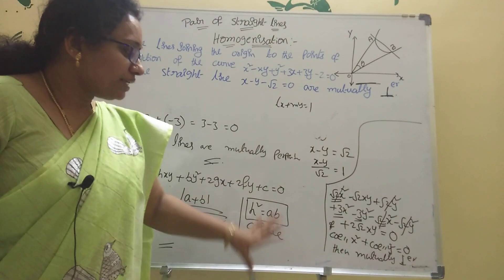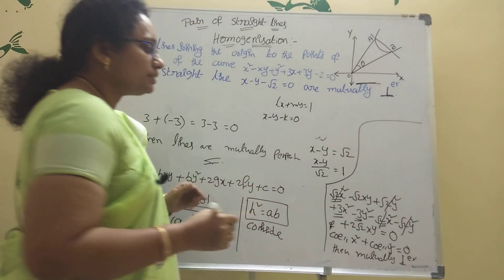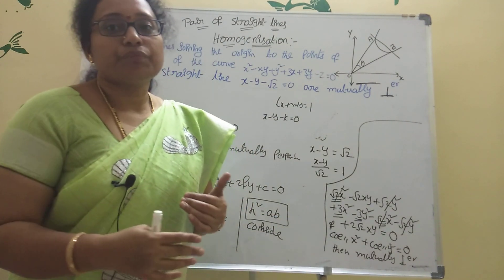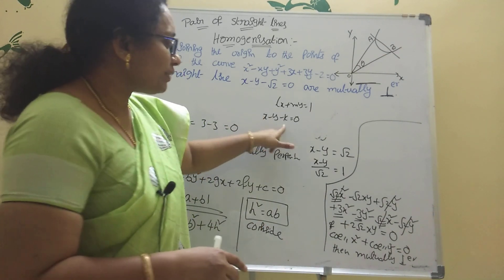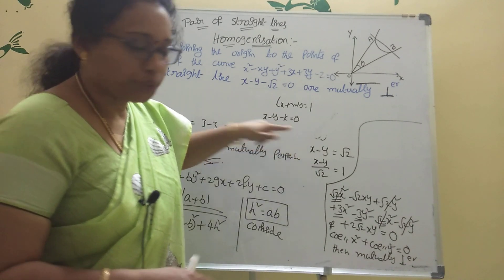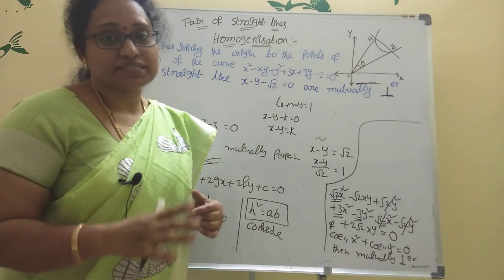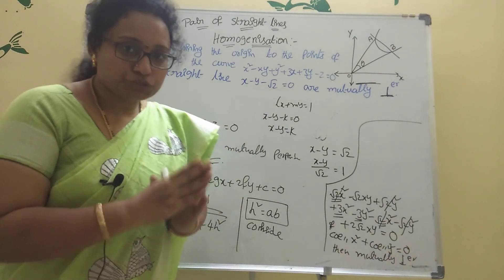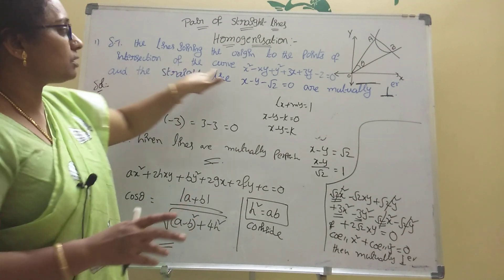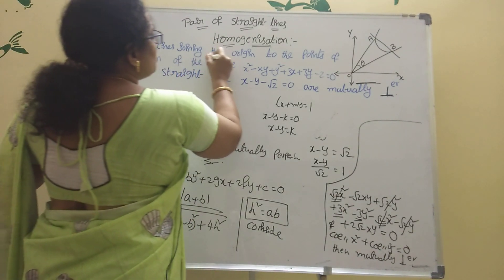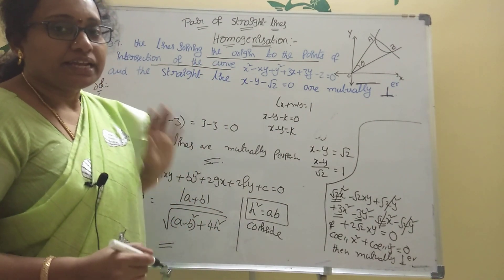Here we have a problem: x minus y minus k equal to 0. Find the value of k if the lines are perpendicular. That is the question. We want to homogenize — what is the question? The line is joining the origin to the points of intersection of the curve.